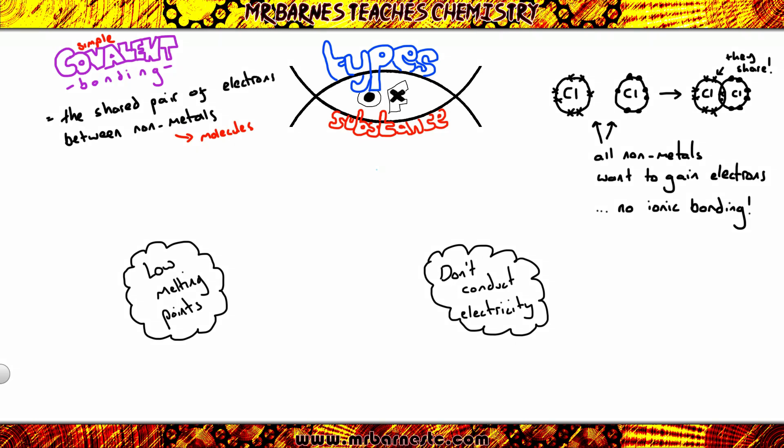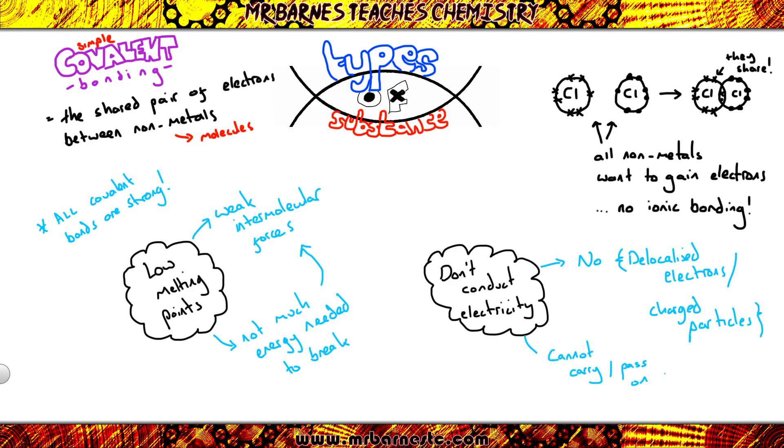Now there are two major properties for simple covalent compounds that you need to know, which is they have low melting points and they do not conduct electricity. The reason they have low melting points is because there are weak intermolecular forces between the molecules. These weak intermolecular forces are nice and easy to break, so not much energy is needed to break them, giving them low melting points. It's important to remember covalent bonds are strong, so if you turn around and say the bonds are easy to break, you will not get the marks. You have to say weak intermolecular forces. And then why don't they conduct electricity? There are no delocalized electrons, or no charged particles that are free to move, therefore it cannot carry or pass on a charge.